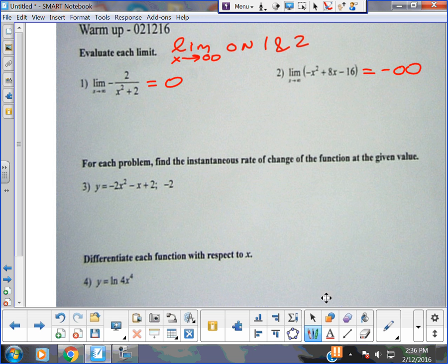The number one thing is notation. For number three it says for each problem find the instantaneous rate of change of the function at the given value. Guys, the instantaneous rate of change is a derivative, right, it's a tangent line. So all you have to do is get y prime, which is what, negative 4x minus 1. You guys agree? And evaluate it at negative 2. So I'm pretty sure it's 7 is the answer.